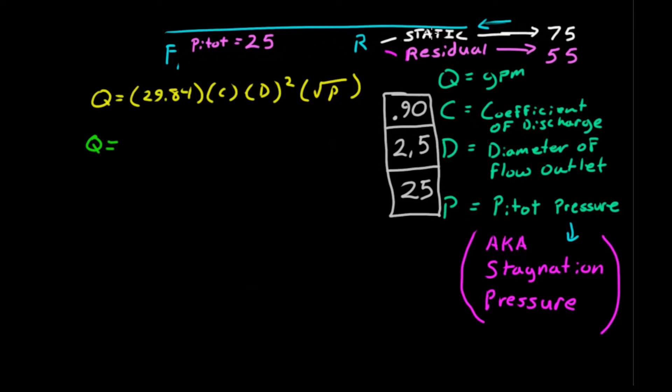Let's try the first one. We have a static of 75. We flow our hydrant and get a pitot reading of 25 while at the same time having a residual pressure of 55. A 0.9 coefficient of discharge, 2.5 inch diameter outlet, and 25 on the pitot would be entered as follows.